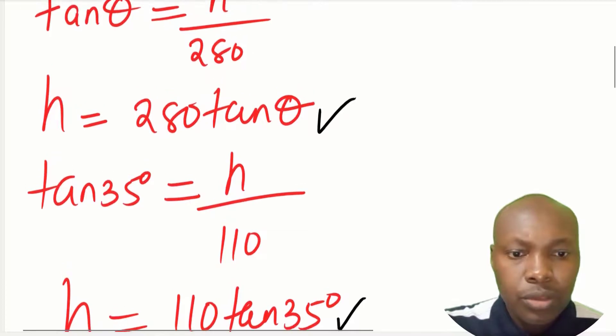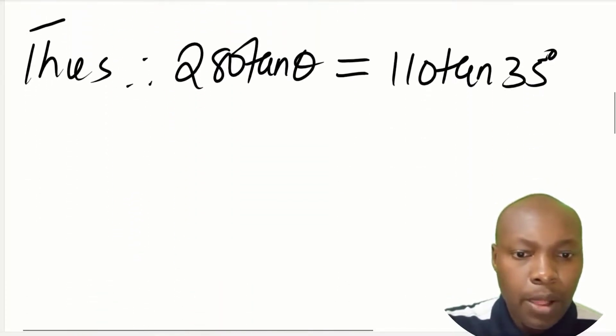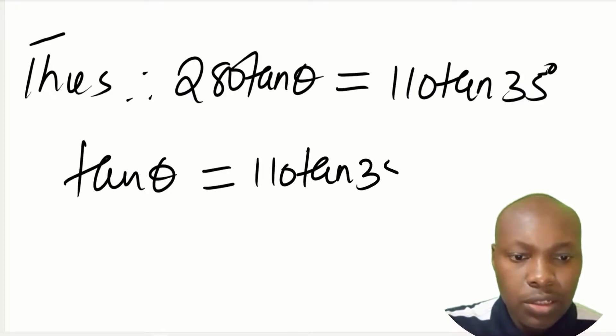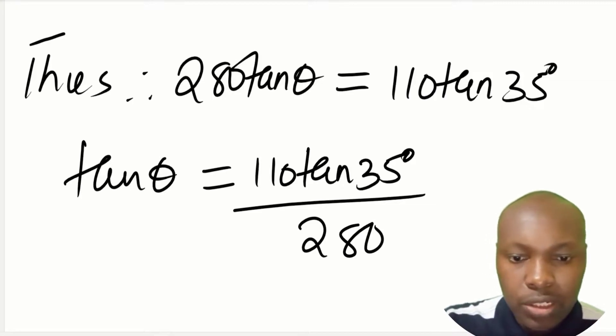So since we require to get the theta, we divide both sides by 280. We get tan of theta is equals to 110 tan 35 divided by 280.